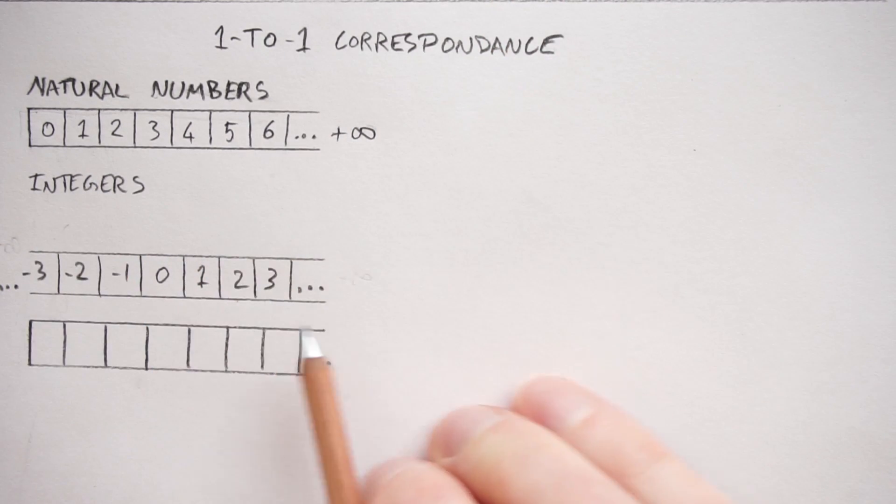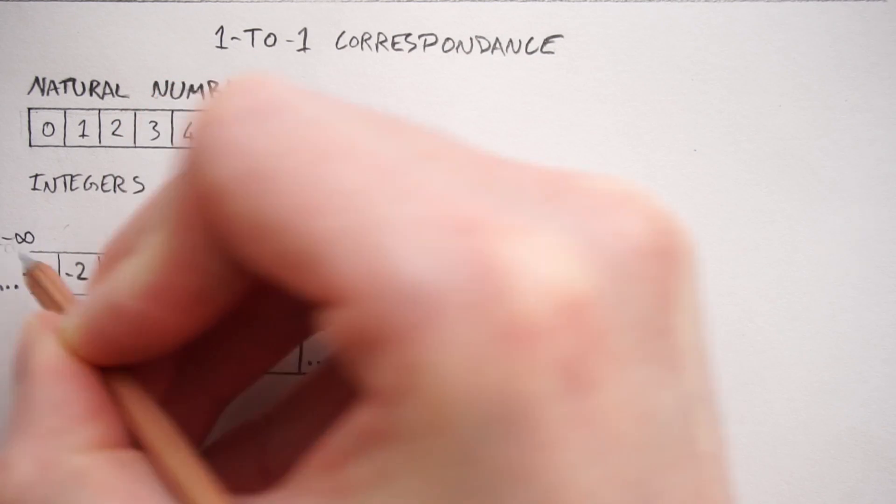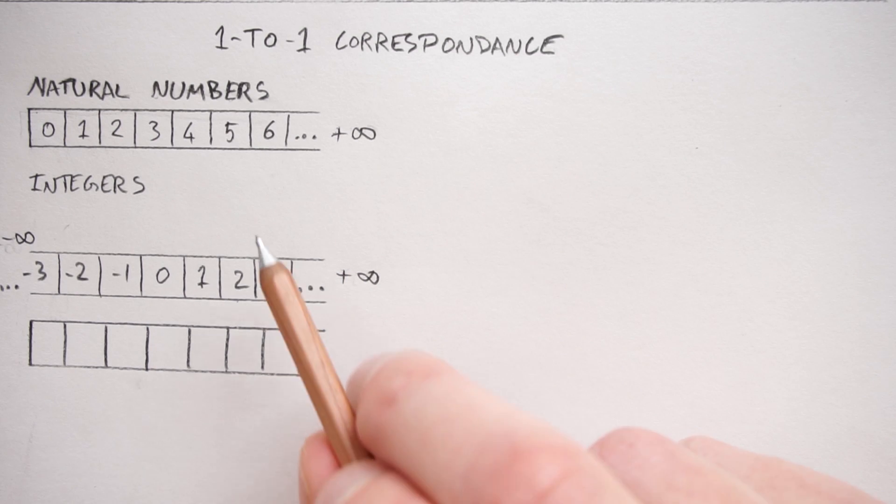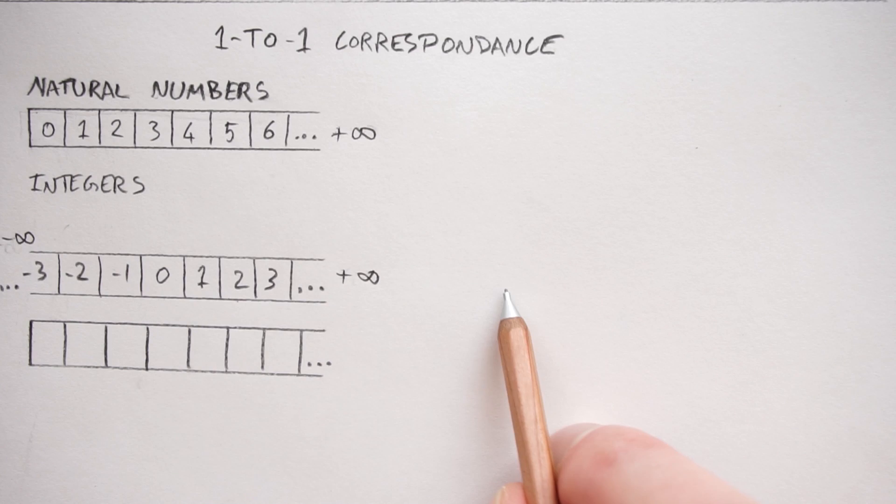And the integers, which we looked at before, which are the set of numbers which go from negative infinity up to positive infinity. Now the question is, are these two sets of numbers the same size of infinity? Because natural numbers have just got one infinity, whereas the integers have got two.